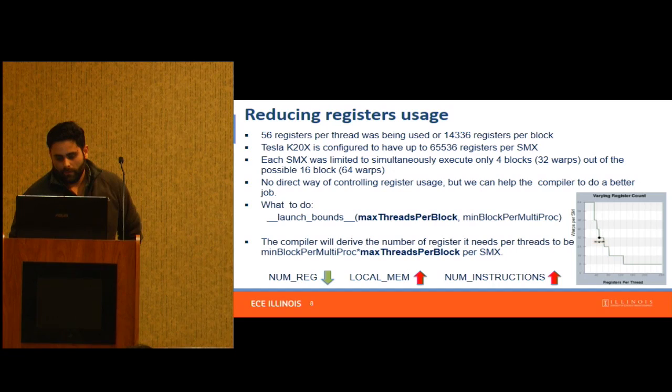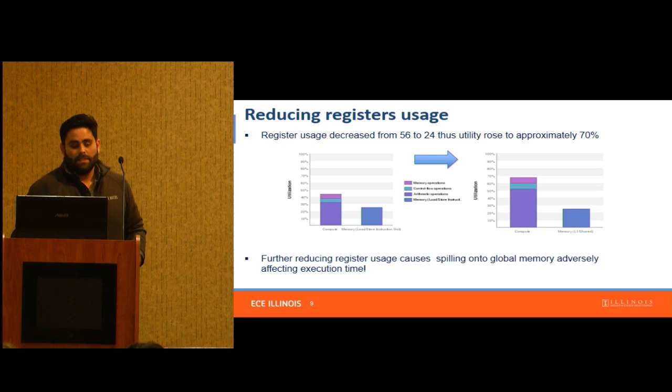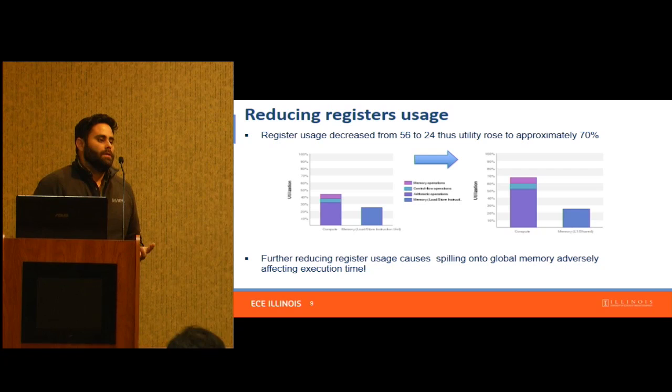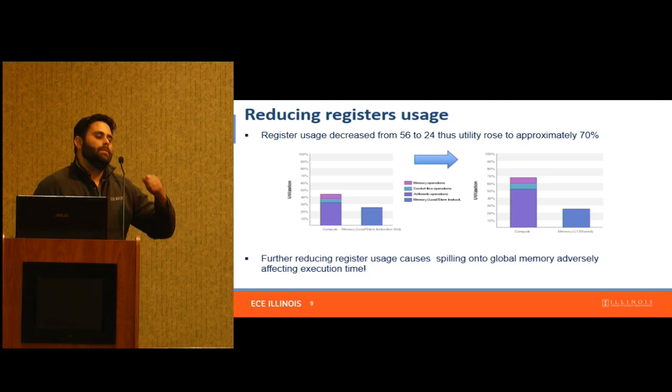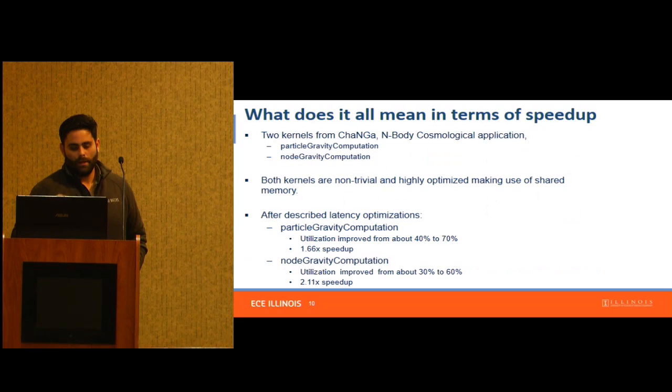We applied this optimization, and this is the result we got — this is what we really wanted. We went from about 40% utilization to approximately 70% utilization. You ideally want to see around 80%. But when we kept trying to minimize the number of registers further, we started getting penalties because we were going to memory all the time.